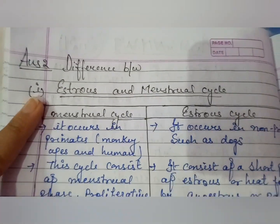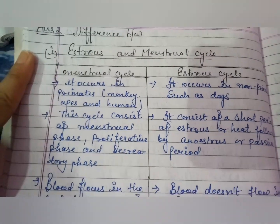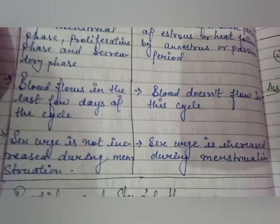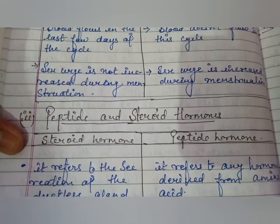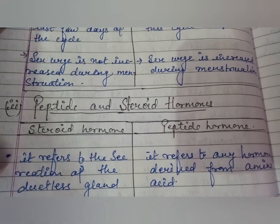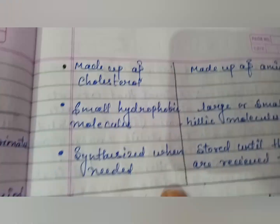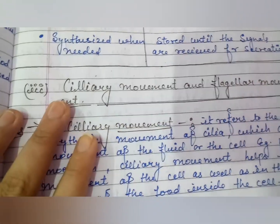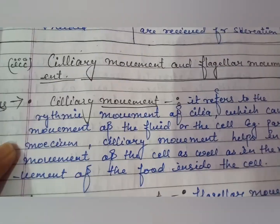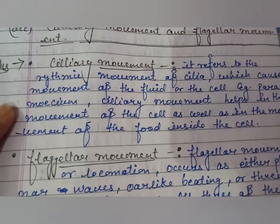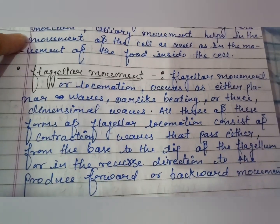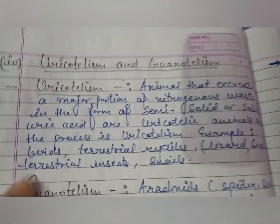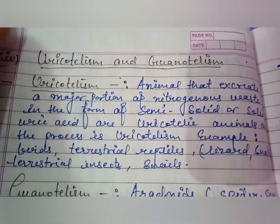The second question is the difference between the estrus cycle and menstrual cycle. The third is peptide and steroid hormone. The fourth is ciliary movement and flagellar movement, and the fifth is uricotelism and guanotalism.